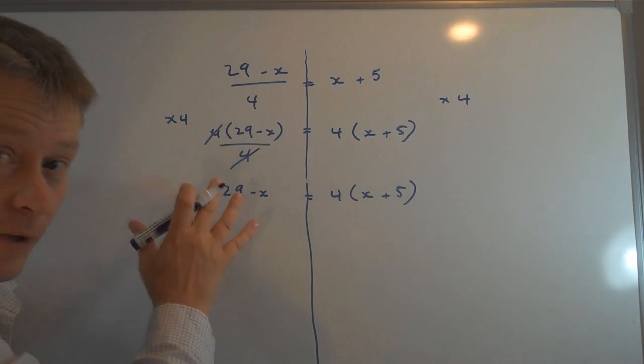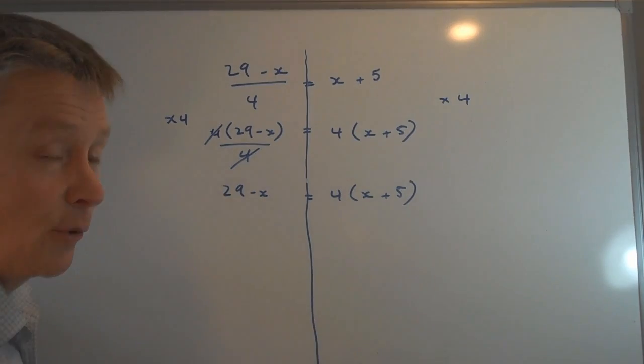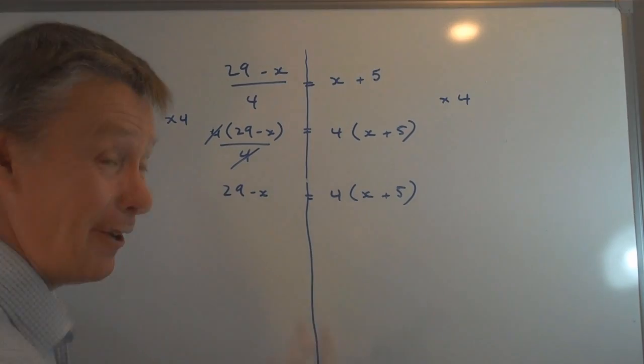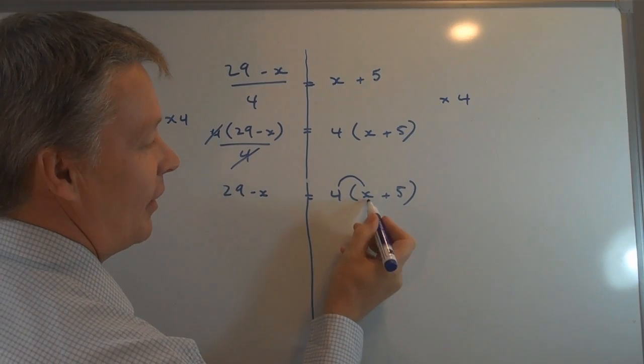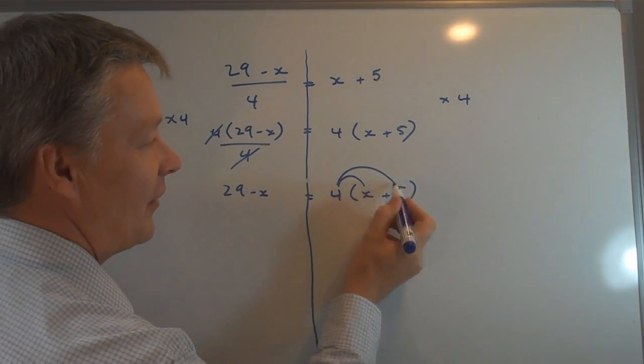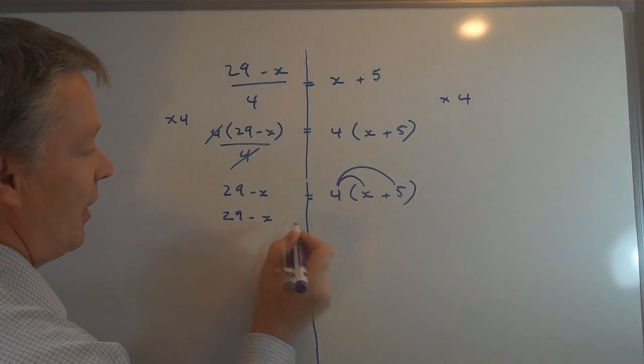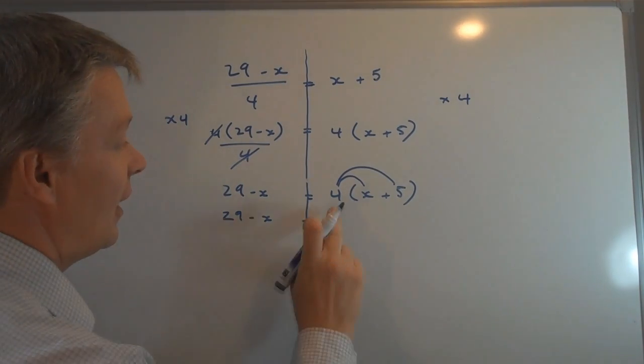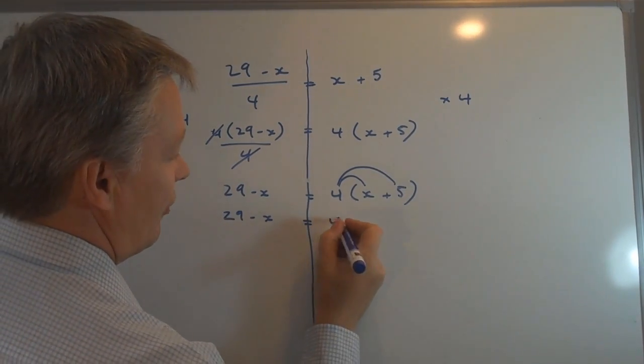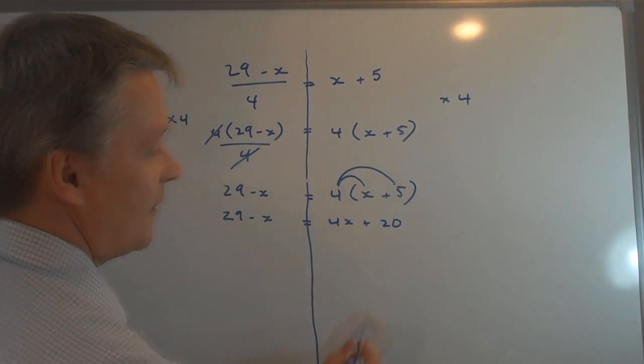So on this side of the equation, I've managed to get rid of this divide by 4. On this side of the equation now, I've got brackets I've got to deal with. So what I'm going to do is get rid of those by multiplying out the brackets. So the first thing I do is I multiply the first term by 4 and then the second term by 4. So on this side, it remains the same. I get 29 - x equals, 4 times x is 4x. Positive 5 times 4 is positive 20.